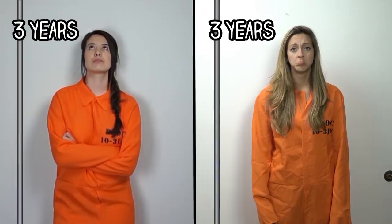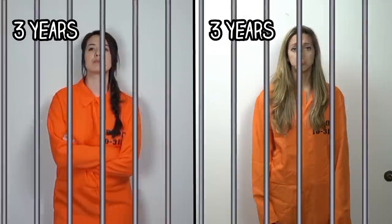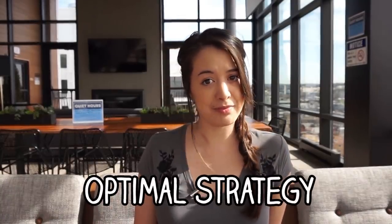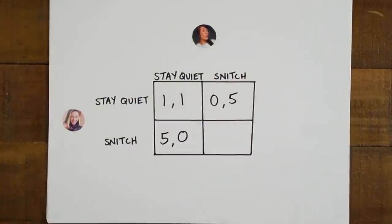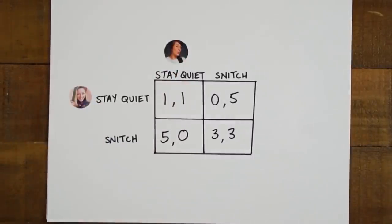Four: you both snitch on each other. "It was all her, I had nothing to do with it." The officer gives you both three years for dishonesty and being bad friends. So what's the best thing for you to do here? Or as they say in game theory, what's the optimal strategy? Well let's analyze our options. We'll draw them up in a table with your jail sentence being the left number and Diana's jail sentence being the right. Now the best thing for both of you is to both stay quiet as you'll only get one year each. But you're not playing for both of you — you're playing for you.